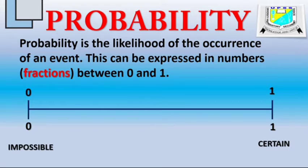Between 0 and 1, we have an even event. It's either it happens or not, a 50-50 chance of happening. So we say it is even.